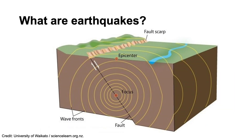Most earthquakes originate within the rigid outermost layer of the Earth, the lithosphere, where the rocks are strong enough to accumulate elastic strain energy until they finally break. As rocks are deformed, elastic strain energy builds up, a bit like the energy stored in a stretched elastic band. Eventually, that elastic strain energy exceeds the frictional forces holding the rocks together, with the result that the rocks suddenly and catastrophically fail.